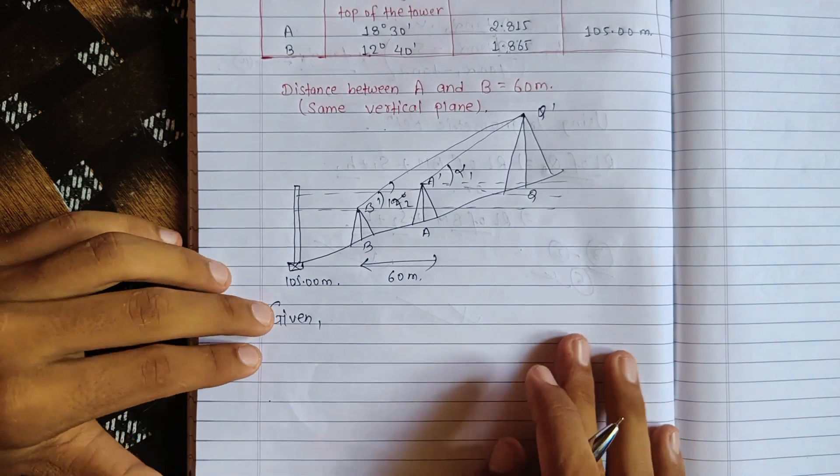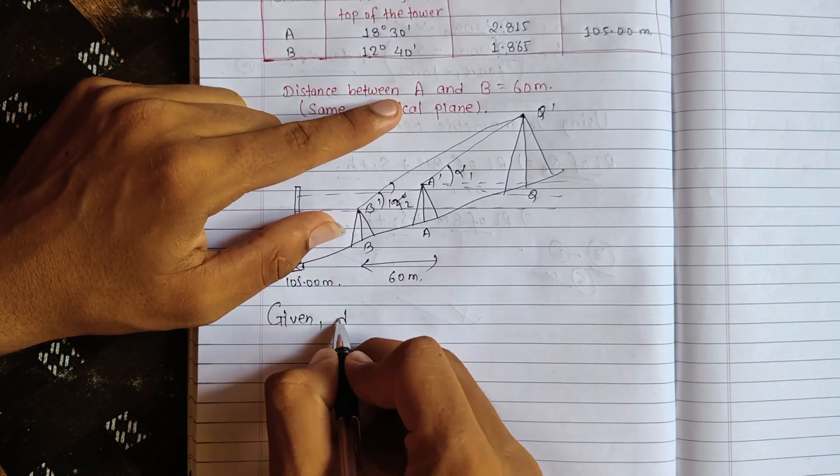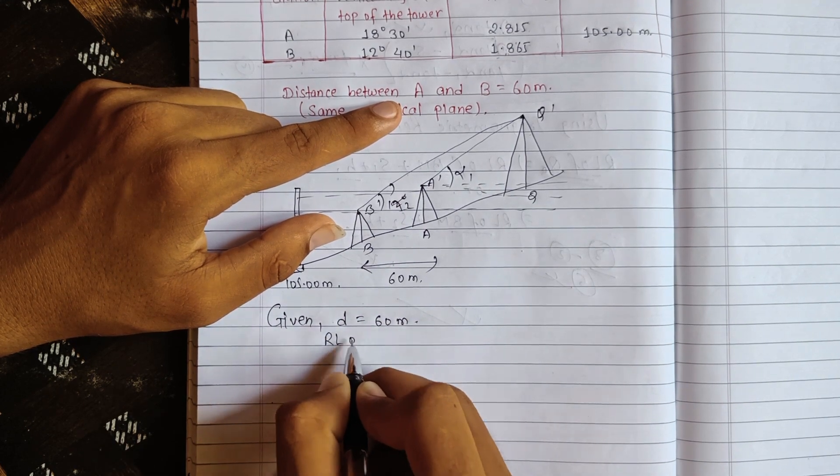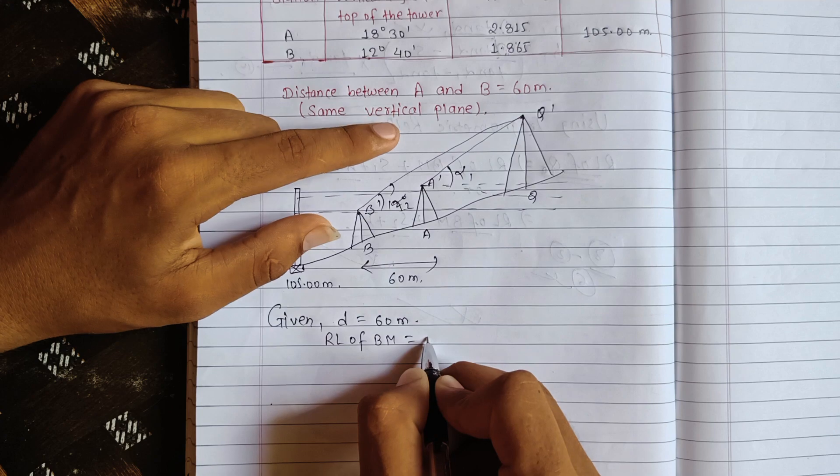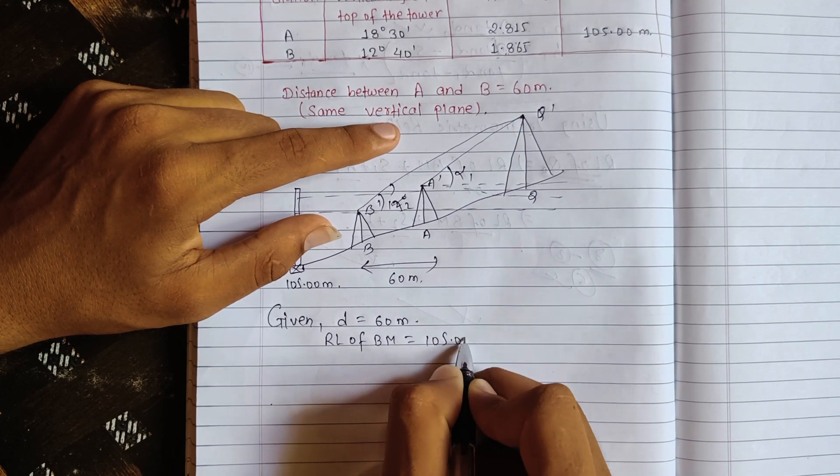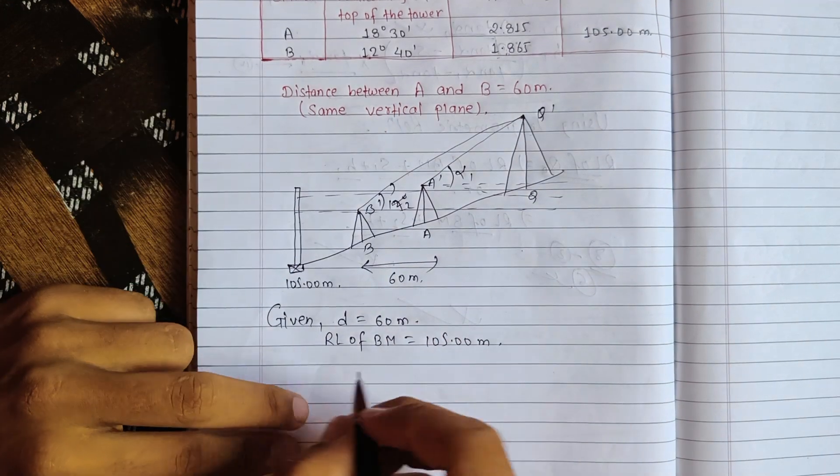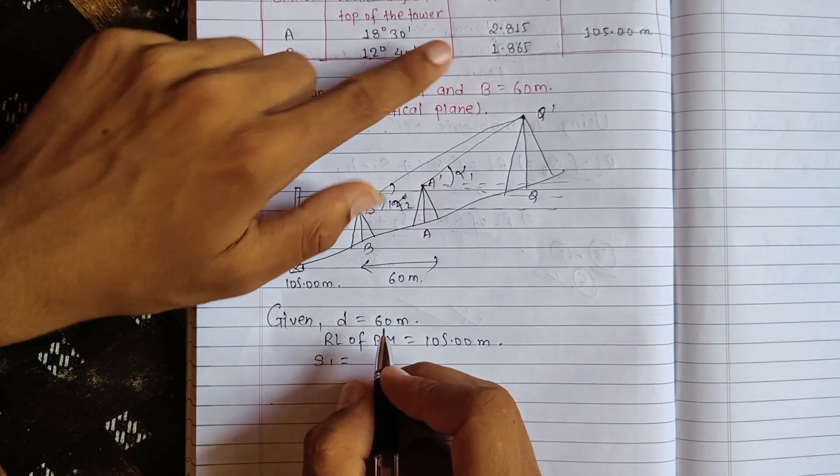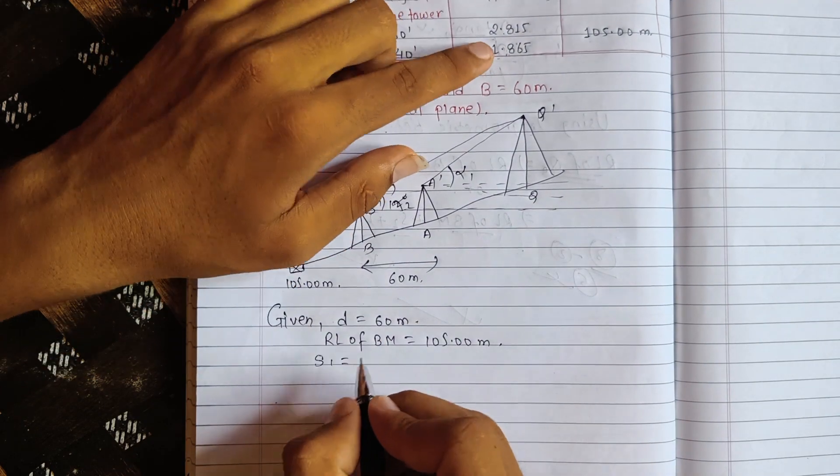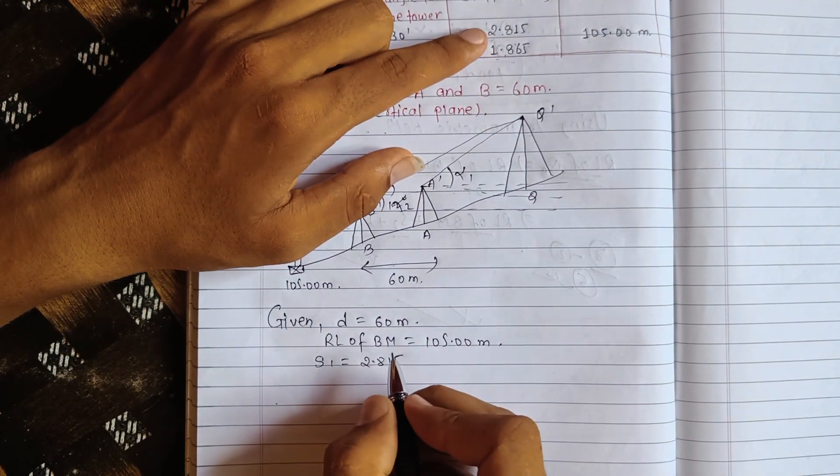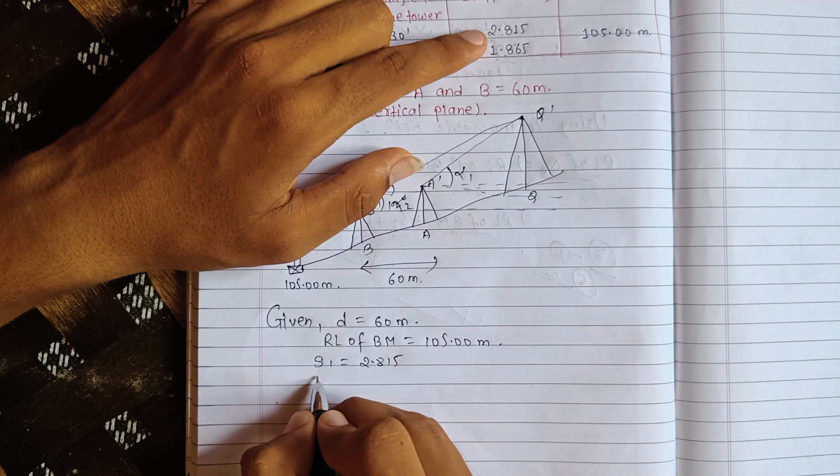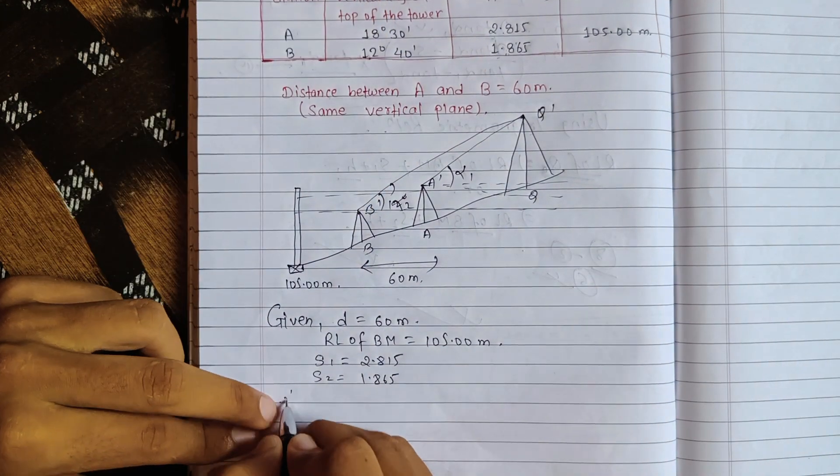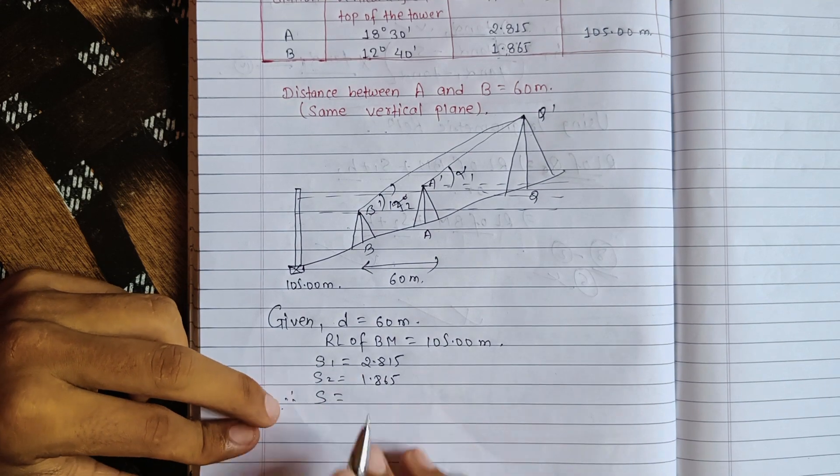What is given: the distance between A and B is equal to 60 meters. The benchmark is equal to 100.00 meters. S1 is equal to 2.815 meters. S2 is equal to 1.865. Therefore S1 and S2 are given.